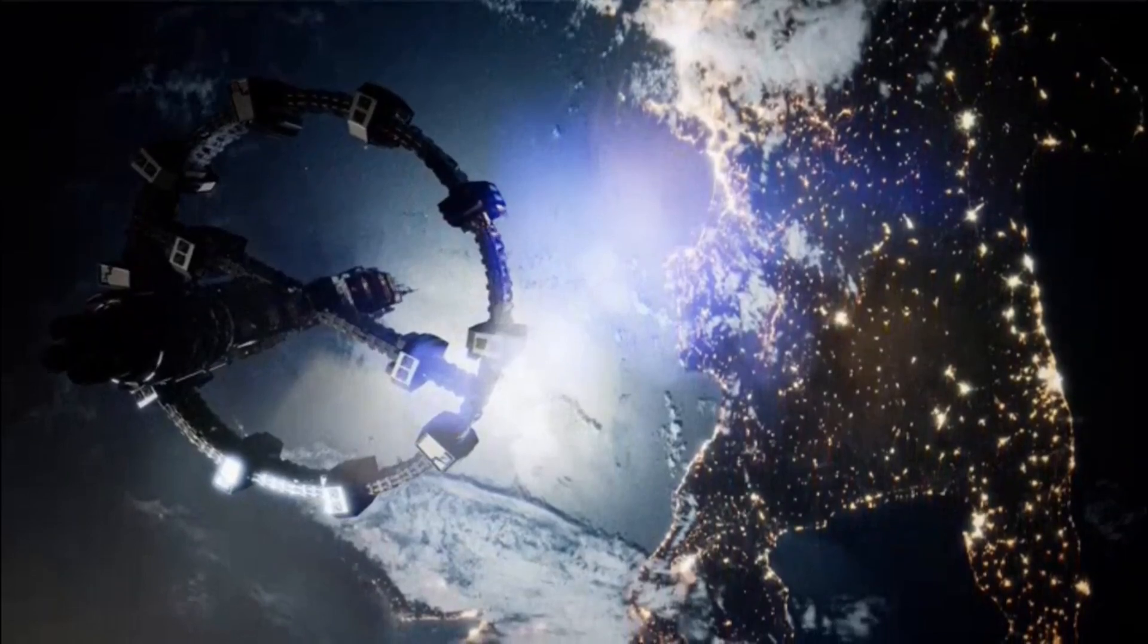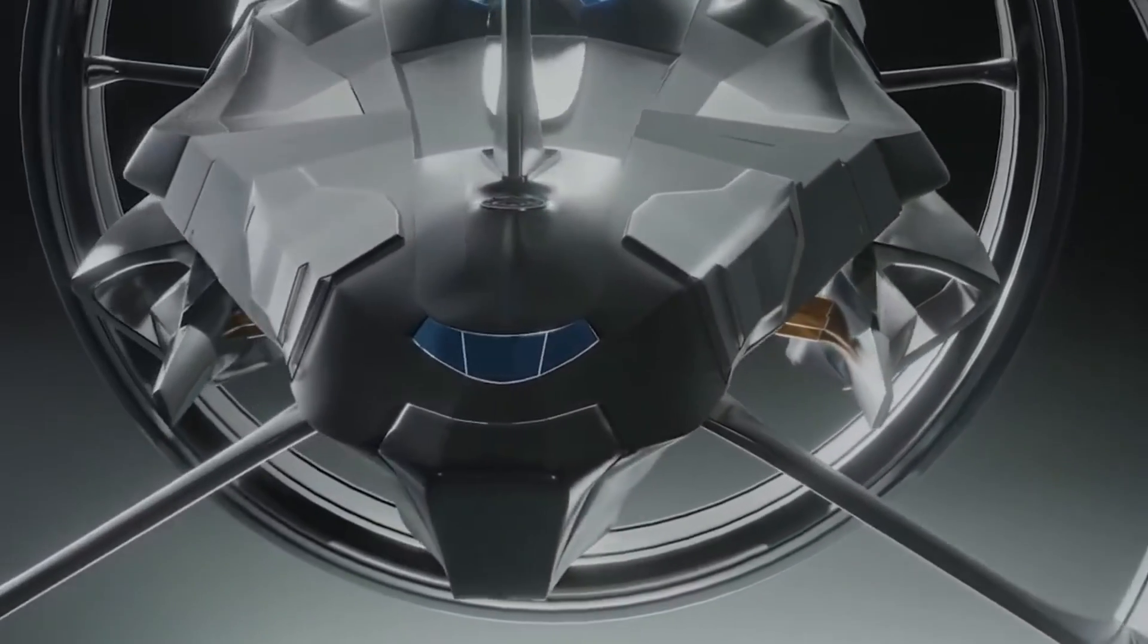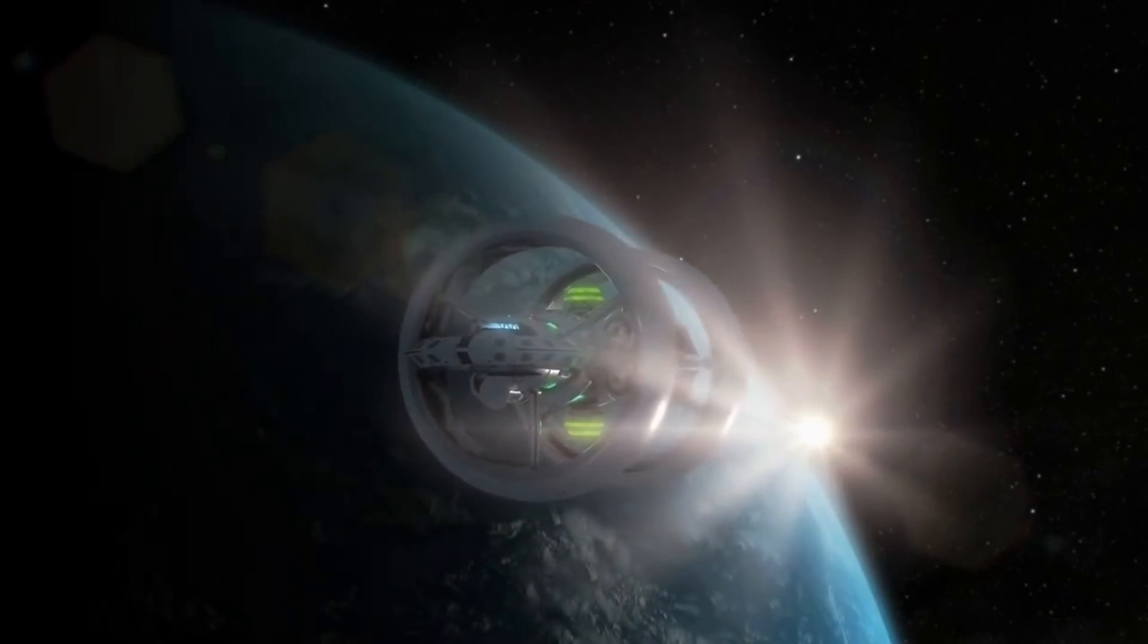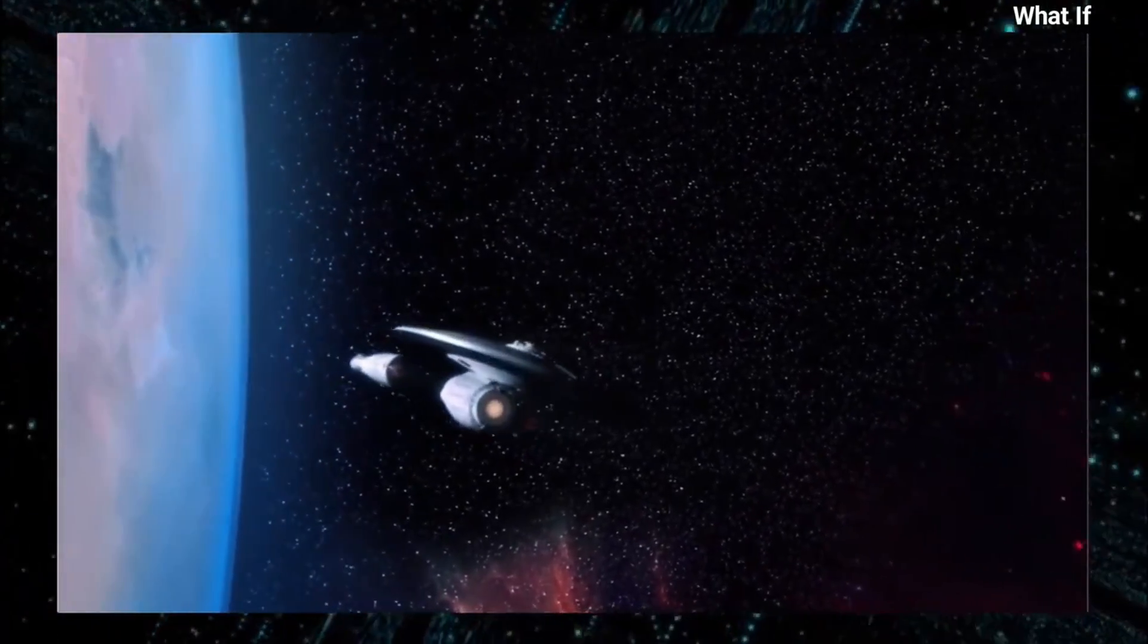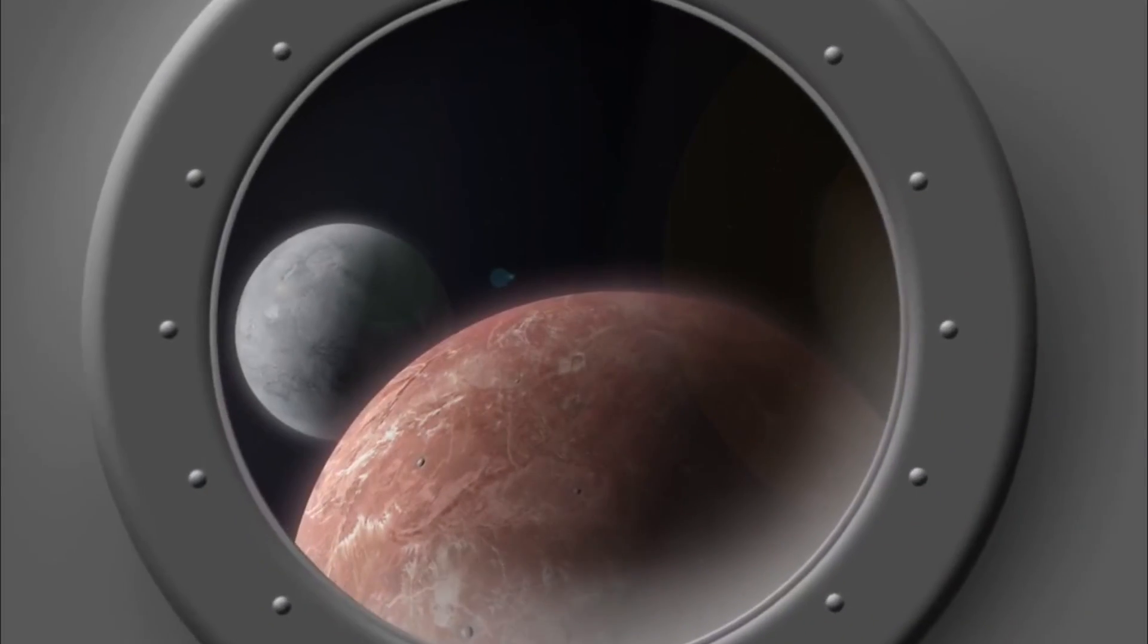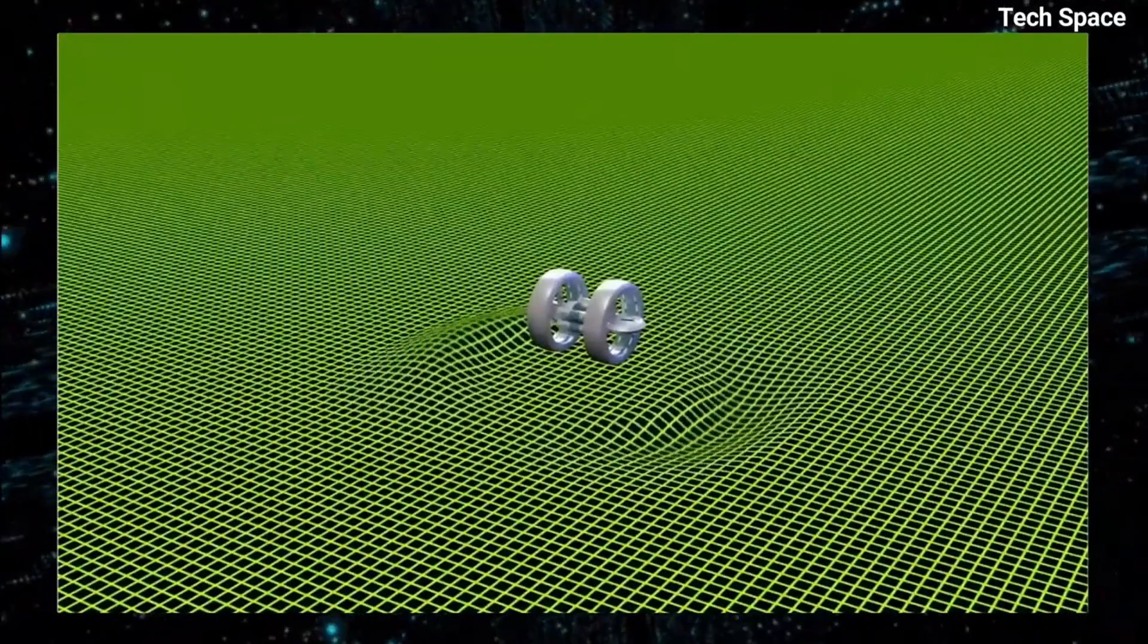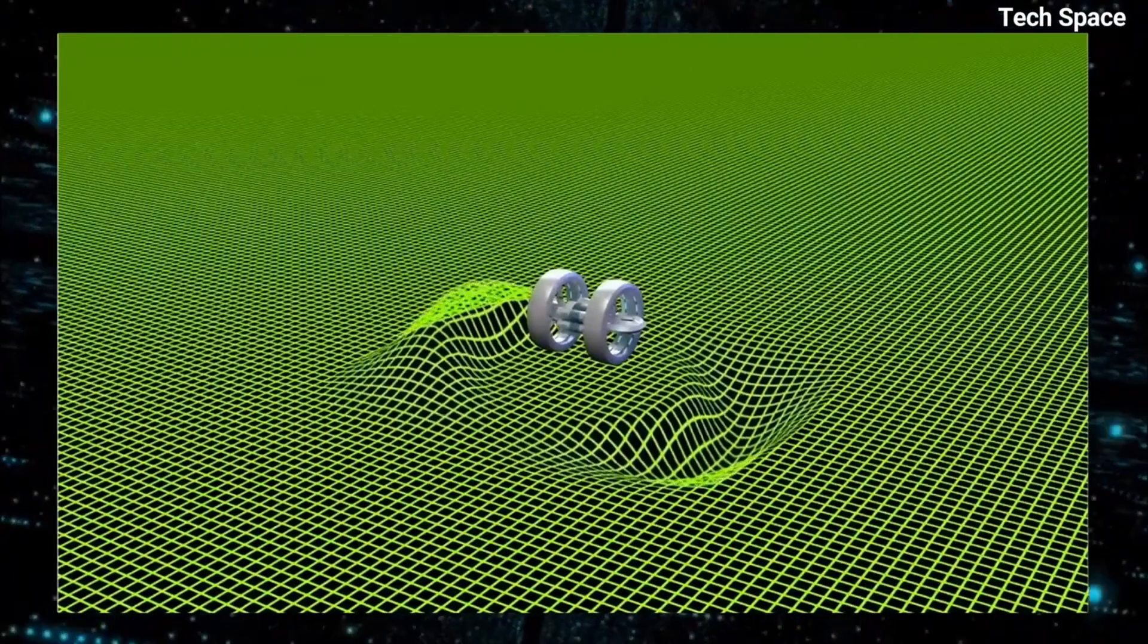Time dilation is a barrier to developing a warp drive. Time dilation occurs when two objects move at high speeds. According to Einstein's theory of relativity, time dilation causes time to slow down for objects moving at high speeds, so time moves slower for the spaceship than for the observer on Earth.